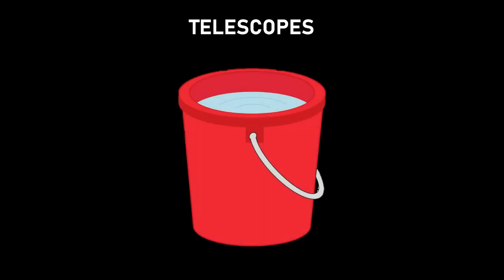Think of it as a bucket of rain. The bigger the bucket, the more rain you collect. In a telescope, the bucket is the optical device — like a lens or mirror — that collects light. For a better analogy, think of a bucket with a funnel at the bottom. All the light collected by the lens or mirror is concentrated, focused, and sent to the detectors. And if you look directly through a telescope, that detector is our eye.